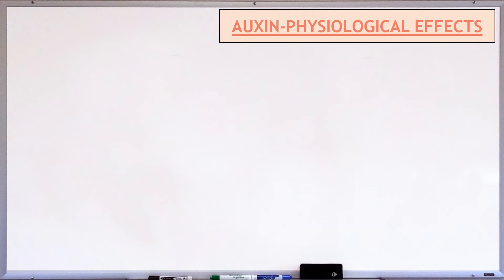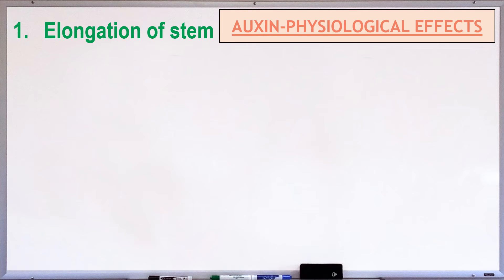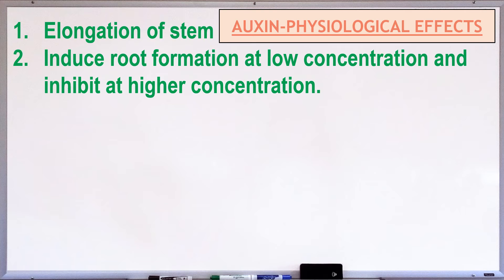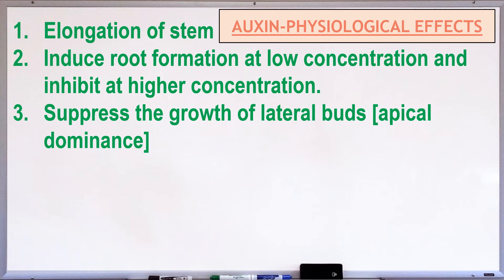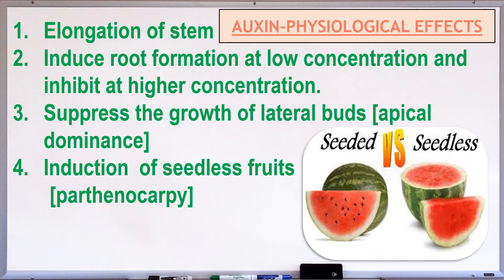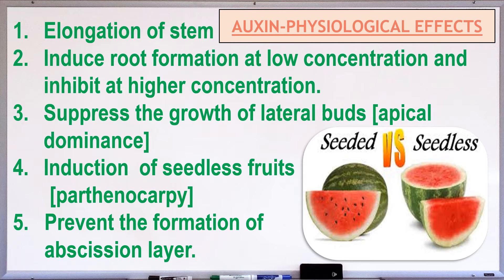The physiological effects of auxin: Auxin promotes elongation of stems. Auxin induces root formation. Auxins of the apical buds suppress growth of lateral buds. Auxin helps to produce parthenocarpic fruits — that is, fruits formed without the process of fertilization, resulting in seedless fruits such as watermelon, grapes and lime. Also, auxin prevents the formation of the abscission layer.